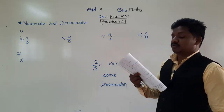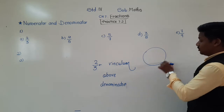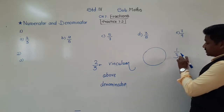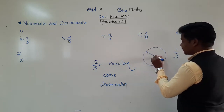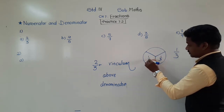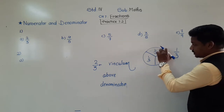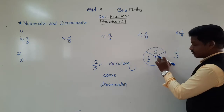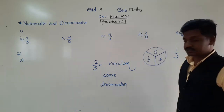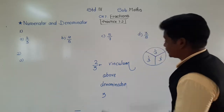Fourth question: there are dash dash one-thirds in a whole. Suppose this is a whole — whole means complete one. One-third means it is divided into three equal parts, so each part is called one-third. Each individual part represents one out of three. So, how many one-thirds are there in one whole? Three one-thirds. Write 3 in that blank. These are the answers of the Quick Check.